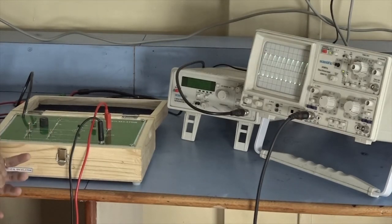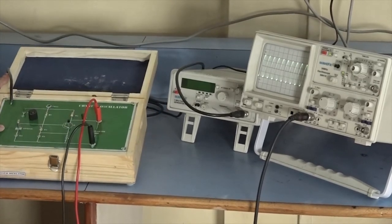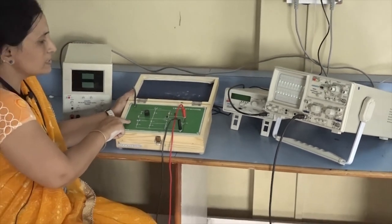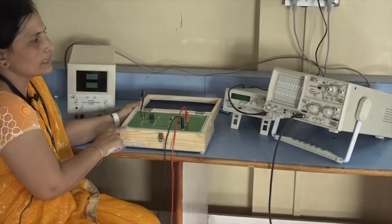You have to calculate the frequency. It will be F equals 1 upon T. So 1 upon 0.5 into 10 raise to minus 6. You will get 2 megahertz which is the frequency of your crystal. Your crystal frequency and the output frequency will be exactly same.